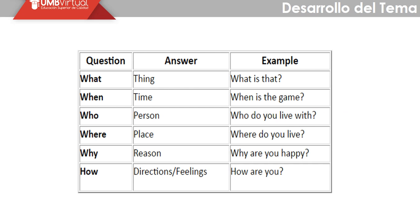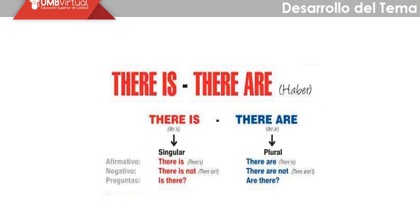Now let's move on. We have covered the Saxon possessive, which has two uses — possession or relations between objects and persons — and WH questions, used to inquire about specific types of information. Now we have 'there is' and 'there are.' 'There is' is singular, 'there is not' is the negative form, and 'is there' is the question form. 'There are' is plural, 'there are not' is negative, and 'are there' is for questions.